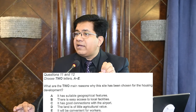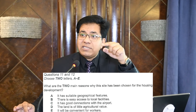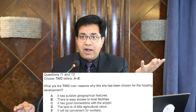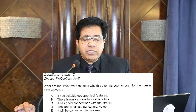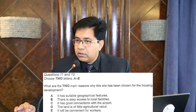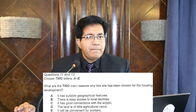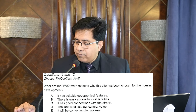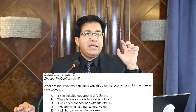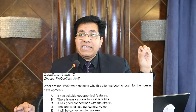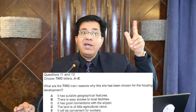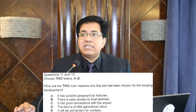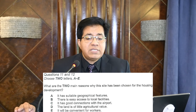Option D is wrong because when land is used for farming, it is of great agricultural value — the opposite of 'little agricultural value.' Now option E: 'because of the new industrial center in Nunston, there's a lot of demand for housing for employees.' That means it will be convenient for workers. So the first correct answer is E.